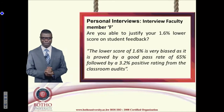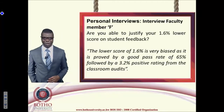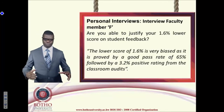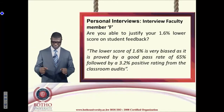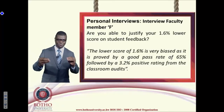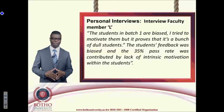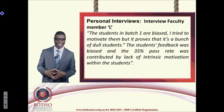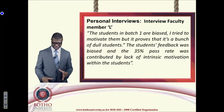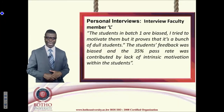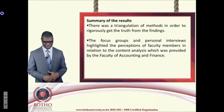Faculty F was asked to justify a low score of 1.6 on student feedback. The faculty member argued that the score is biased, as proven by a pass rate of 65 percent and a positive classroom audit score of 3.2. This confirms no core relationship between lecturer performance variables except for one individual. Faculty L reported that students were biased and could not be motivated, resulting in a pass rate of only 35 percent and poor student feedback and classroom audit results.